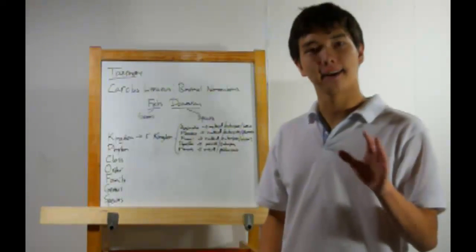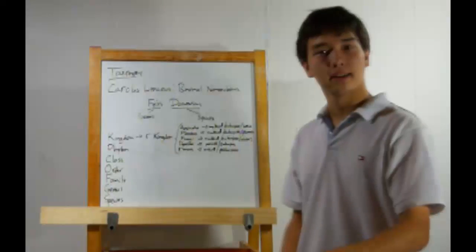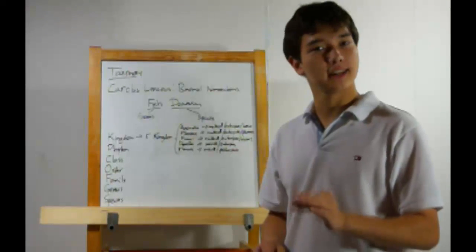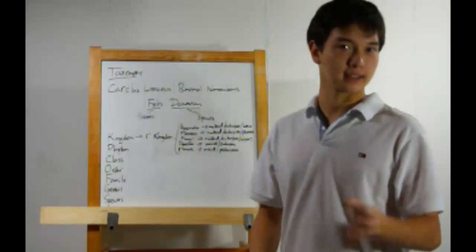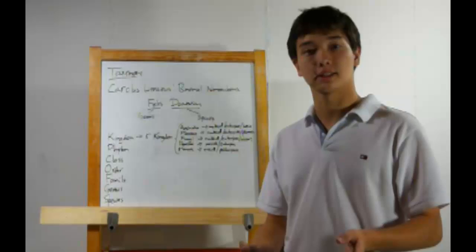Taxonomy is the classification of living things. Taxonomy started in the 18th century with Carolus Linnaeus and a system of binomial nomenclature.